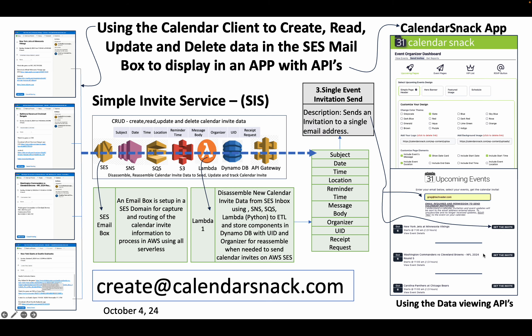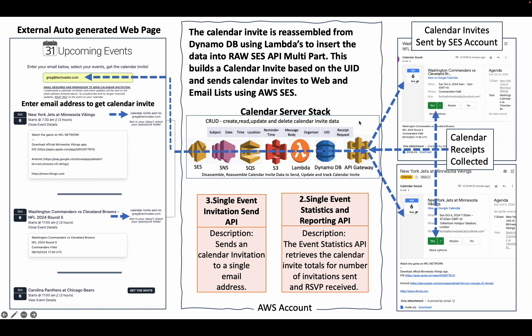This 'get the invite' feature is actually a very elaborate API that sits behind the API gateway. It uses a Lambda to insert the API raw call from SES and build a multi-part calendar invite on the fly. The technology behind that is another layer deep — I'm not going to get into it, but it's a very advanced piece of technology that's part of our intellectual property.